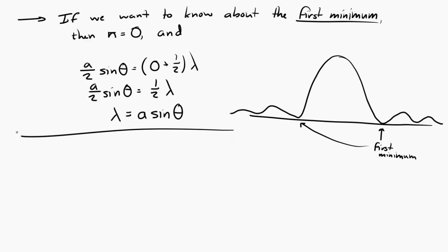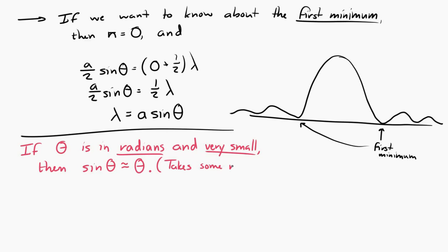Here's another little trick. If theta is measured in radians, and if theta is very small, then it can be shown that the sine of theta is approximately equal to theta. You can show this using a Taylor series, and I'm not going to do that right now. That's a little more math than we're going to get into. But just believe me, if theta is measured in radians and theta is small, sine of theta is approximately theta.